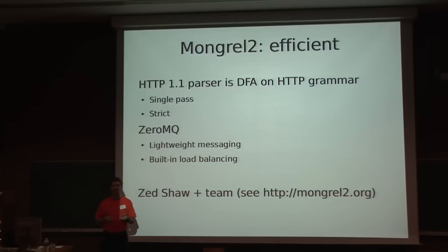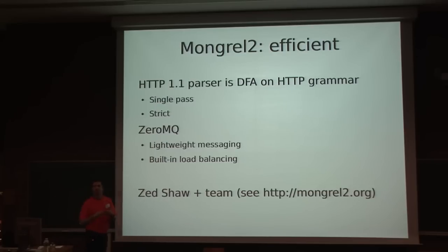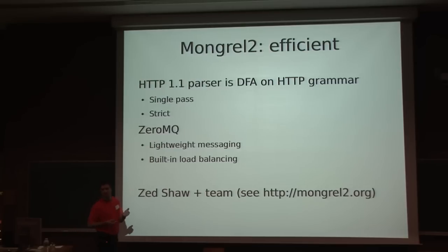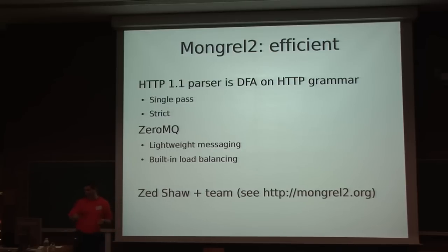On the backend we have ZeroMQ, a very lightweight messaging library. Using this library allows you to abstract from any language and any kind of protocol used to communicate with the backend. There is another lightning talk on the ZeroMQ library itself — the number of languages it supports is astounding, probably 15 to 20 languages, which is a really good thing.